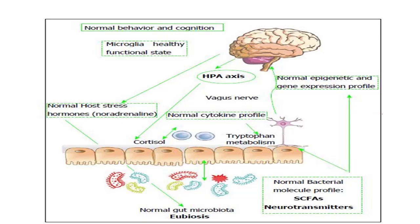Cortisol regulates immune cell activity by acting on the gut permeability and by affecting gut microbiota composition. The communication between gut and brain through the neuroendocrine system is mediated by several microbial-derived molecules including short-chain fatty acids, secondary bile acids and tryptophan metabolites. The HPA axis and the autonomic nervous system regulate each other, and they also collaborate with the immune system to regulate gut health. In a normal healthy condition, gut and brain bi-directionally communicate through nervous, neuroendocrine and immune cell signaling systems, working in harmony to maintain homeostasis.